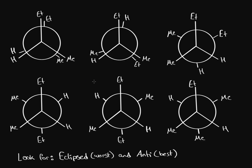What we're going to do is cover the best way to determine the conformational stability of regular alkanes. Usually, when we try to determine the stability of alkanes, we look at their Newman projections. We look for certain things — one of them is called being eclipsed, where a substituent on the front carbon and one on the back carbon are right behind each other exactly. That's called being eclipsed, and that's the worst type of interaction you can have because you have steric hindrance — electron clouds bumping into each other.